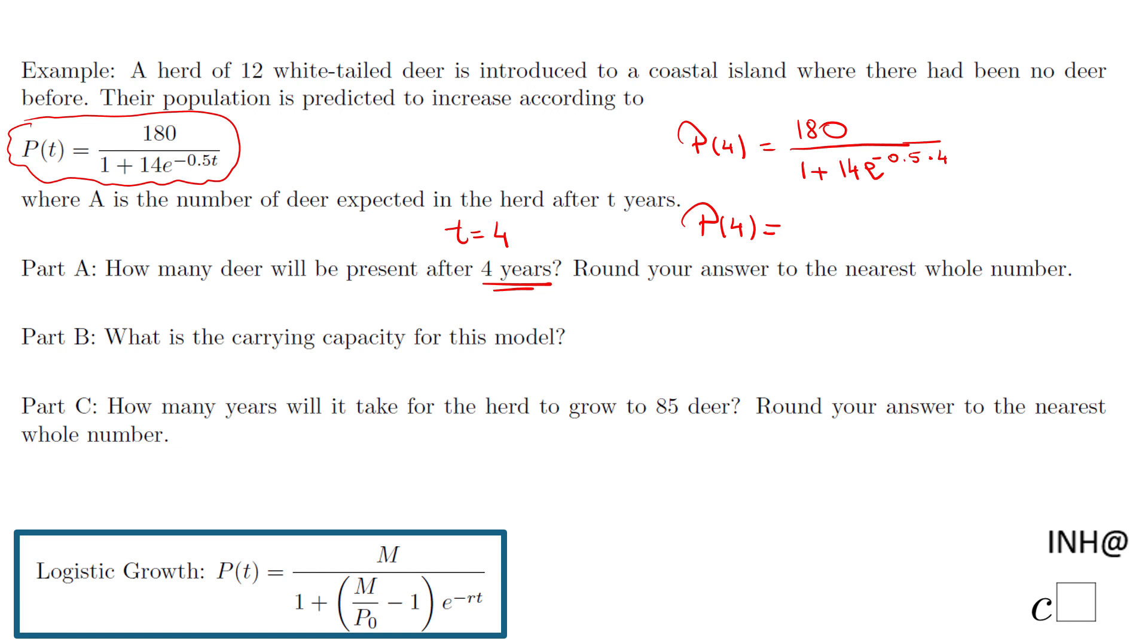And I end up with 62.18. I will say just 62. After four years, the population of this deer is 62. Part B, we have to find the carrying capacity. Carrying capacity is right here.